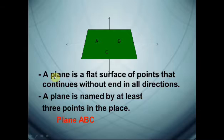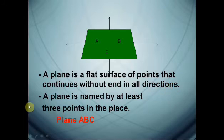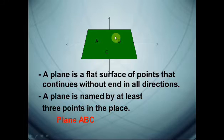The plane. The plane is a flat surface of points that continues without end in all directions. We name the plane by at least three points on it. For example, plane A, B, C.